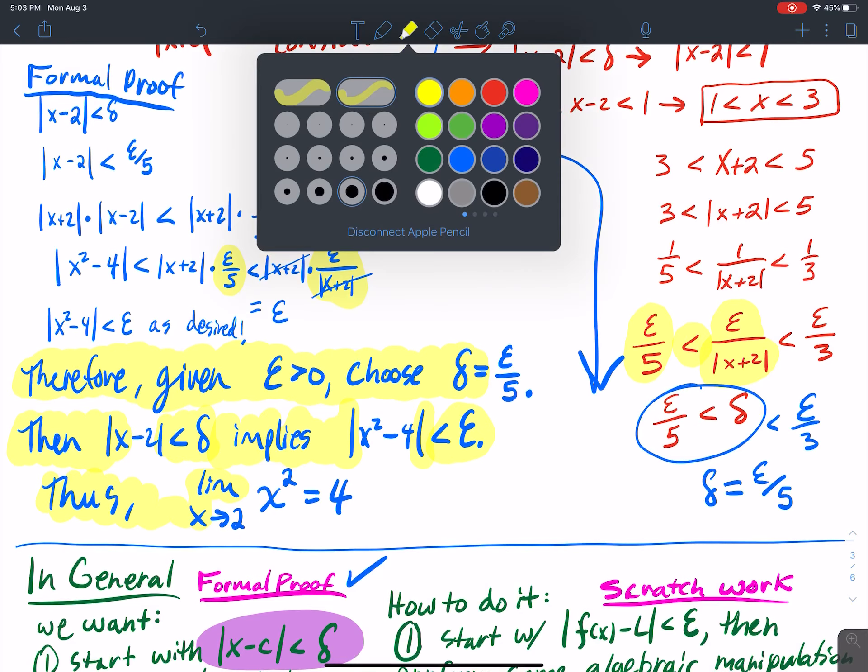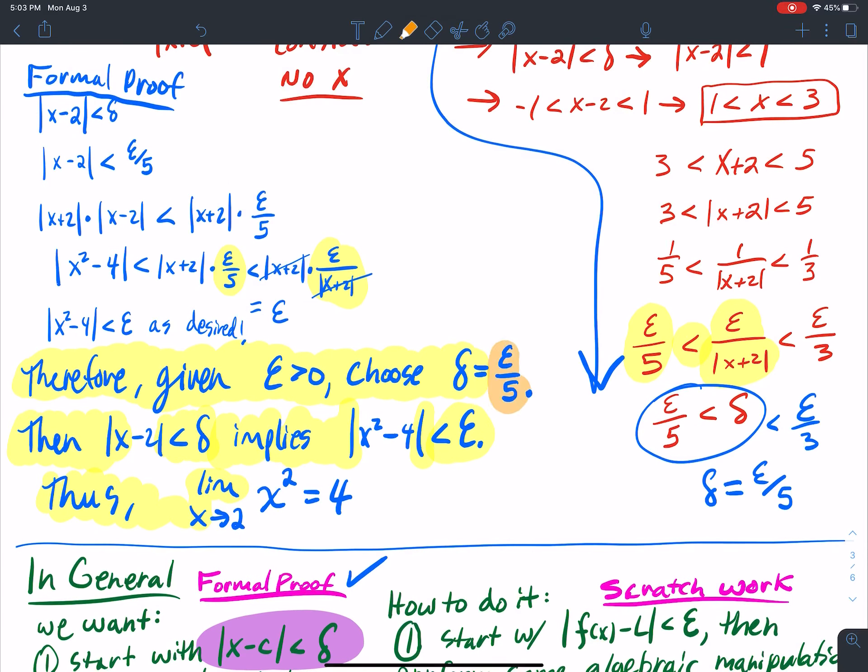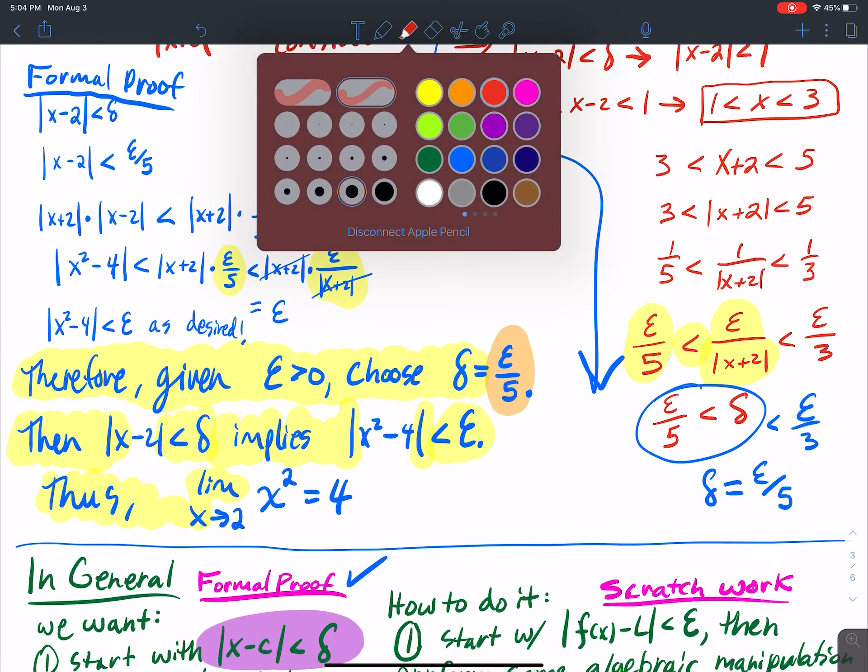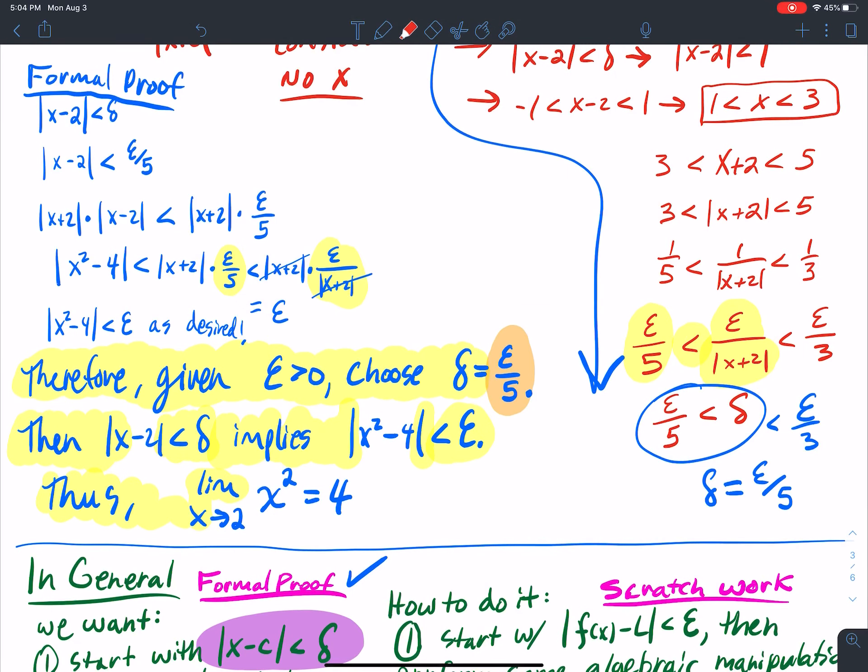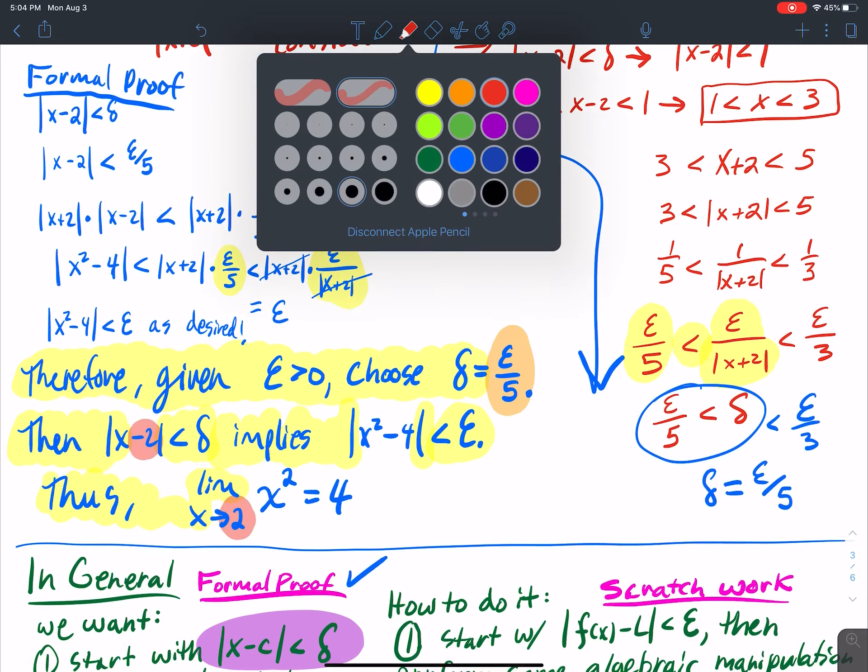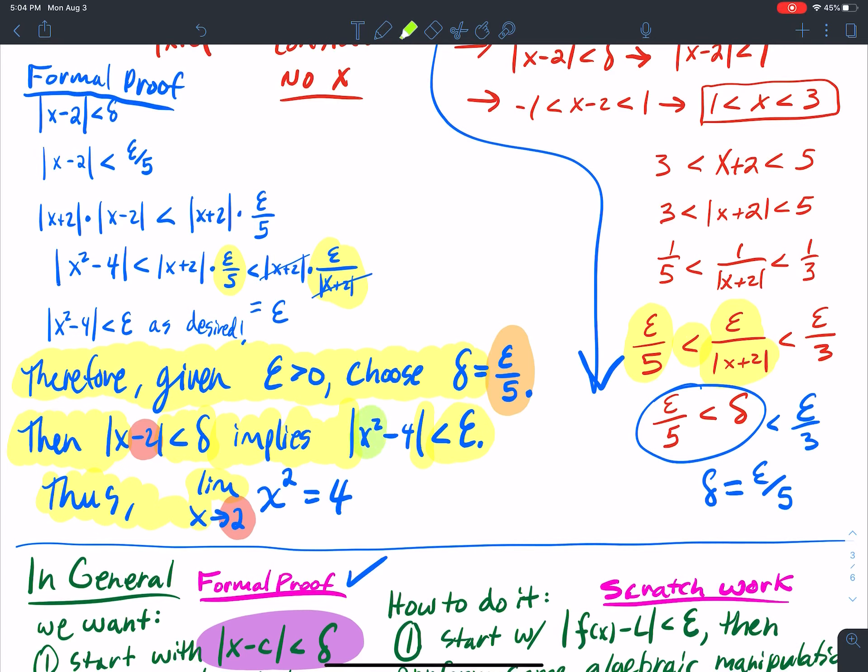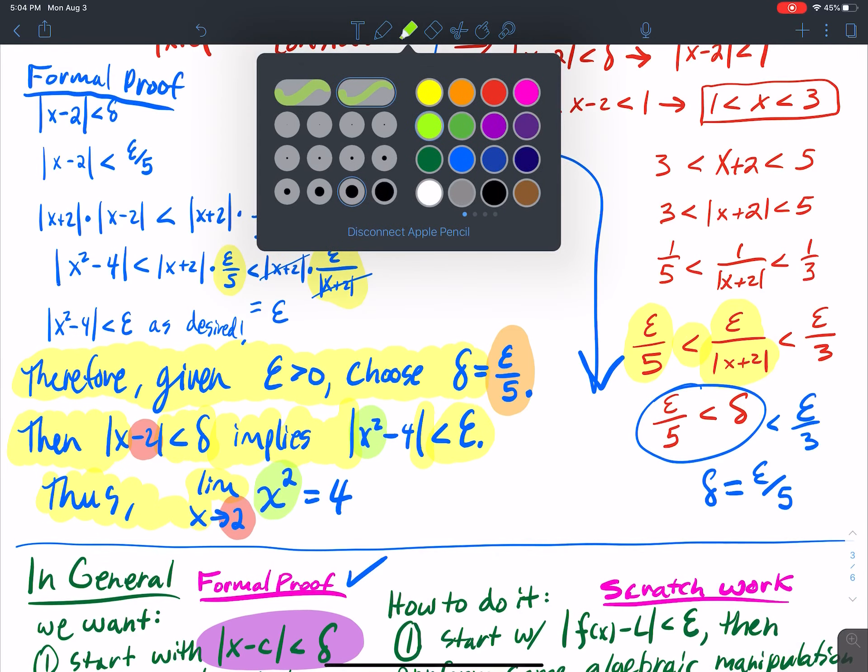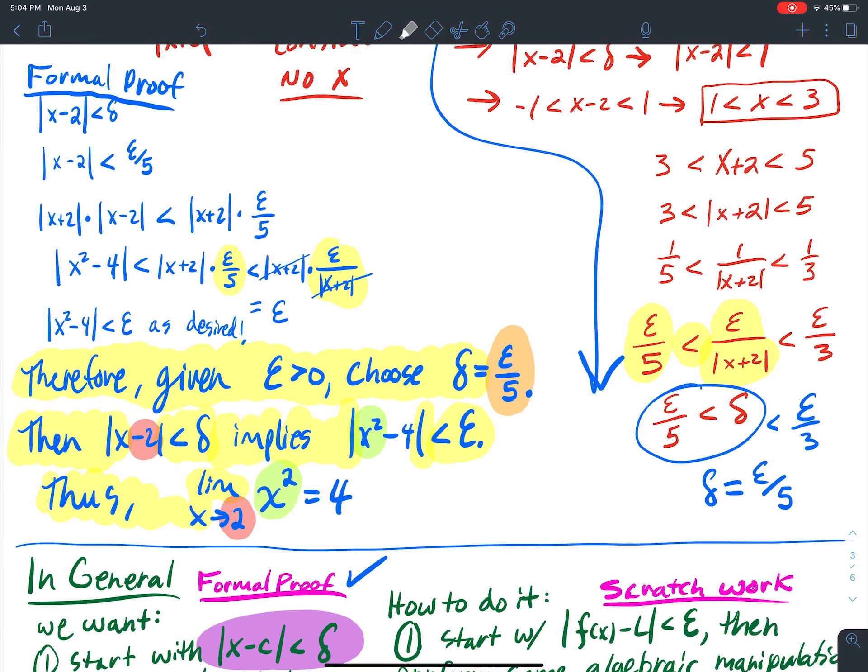So what's going to change from time to time? Depending on what you set delta to be, epsilon over 5, in this particular case, that changes. The c value changes, so it's 2 here. We're limiting to 2, so I'll limit to 2. The function value is x squared here, so I have x squared. And then the limit 4, and that's the limit 4 right there.